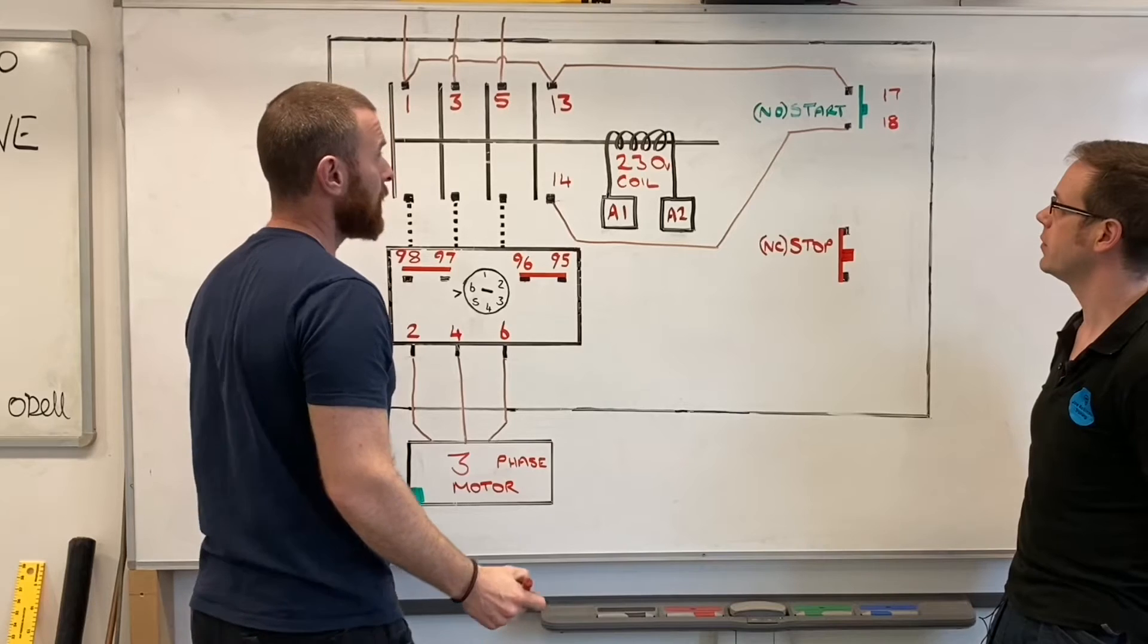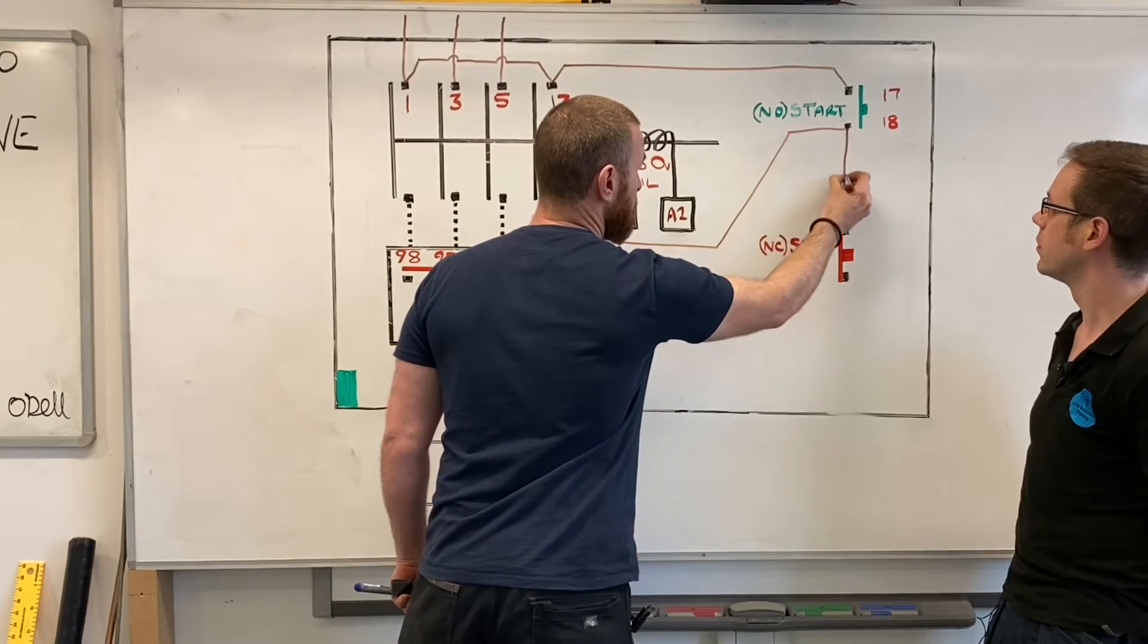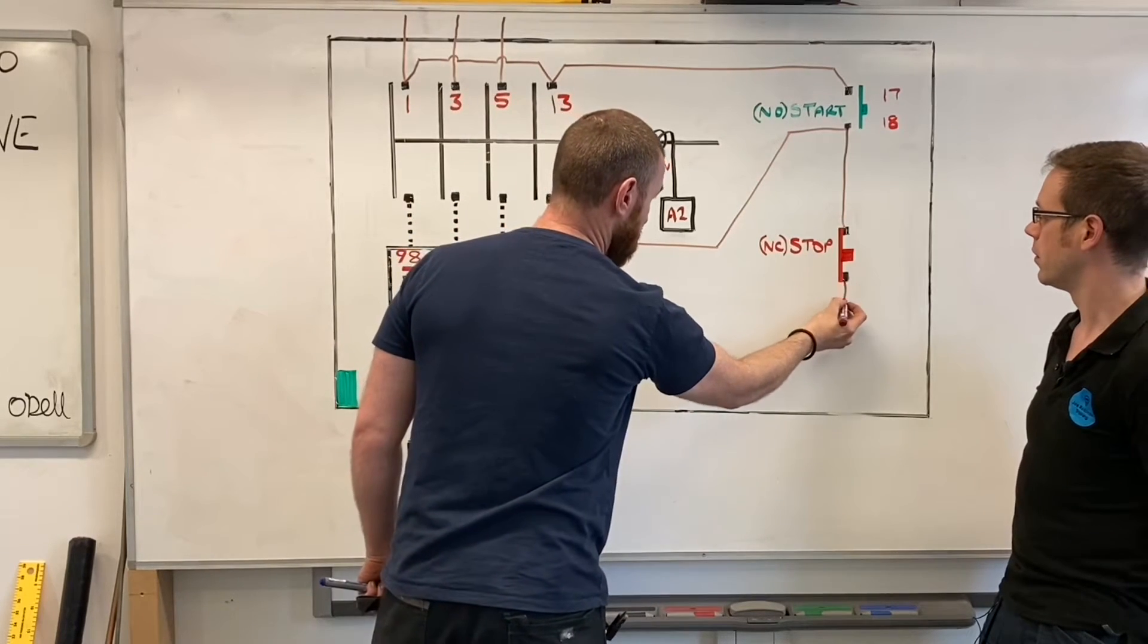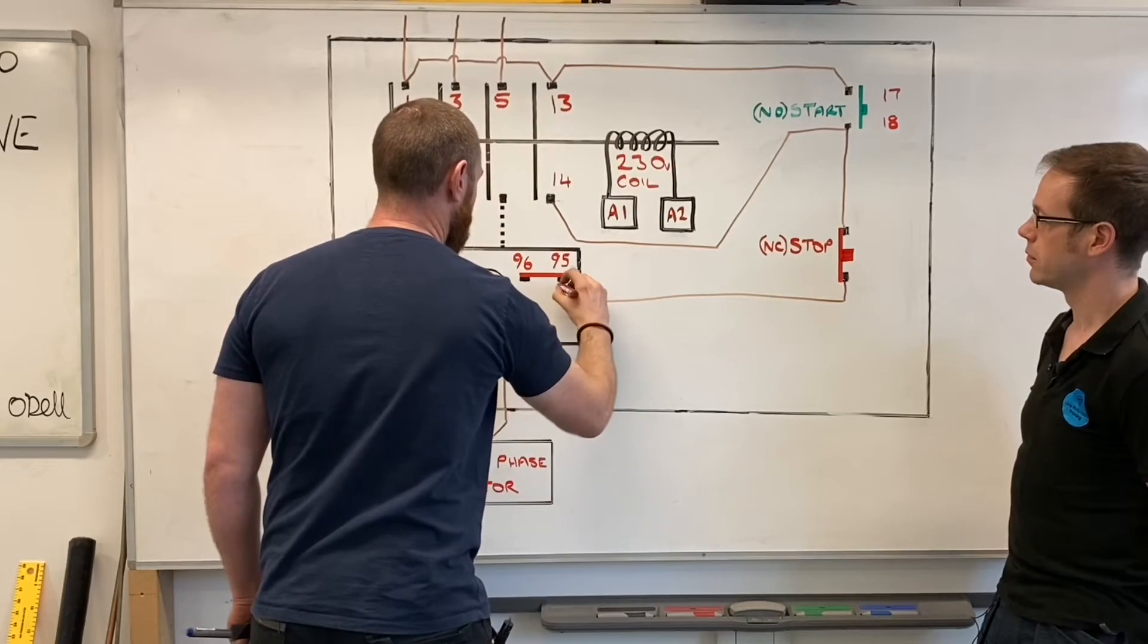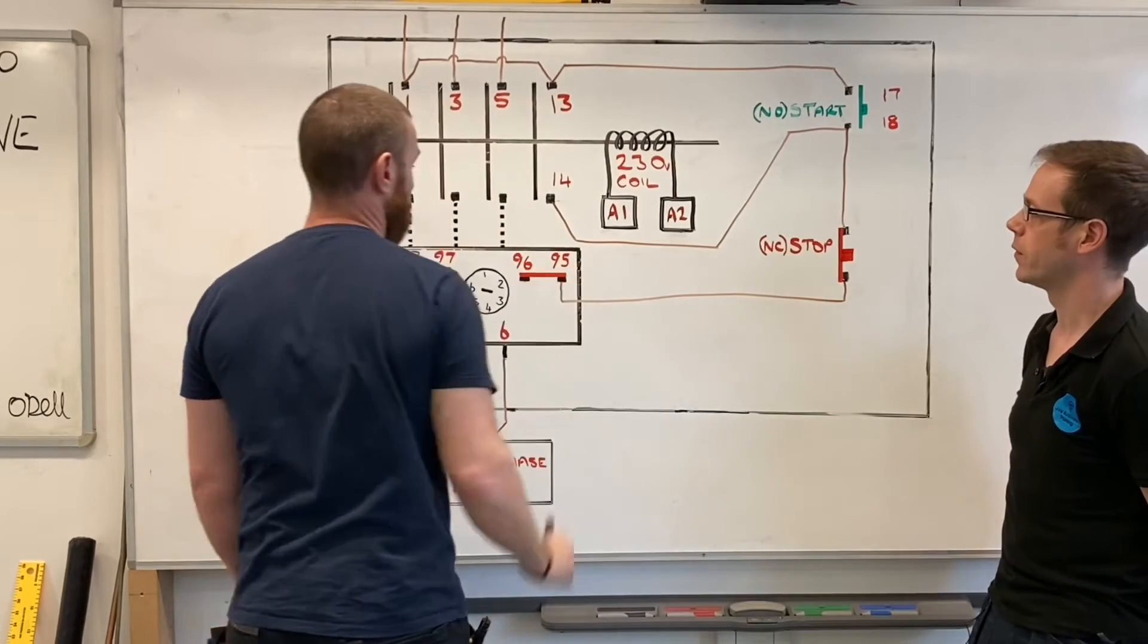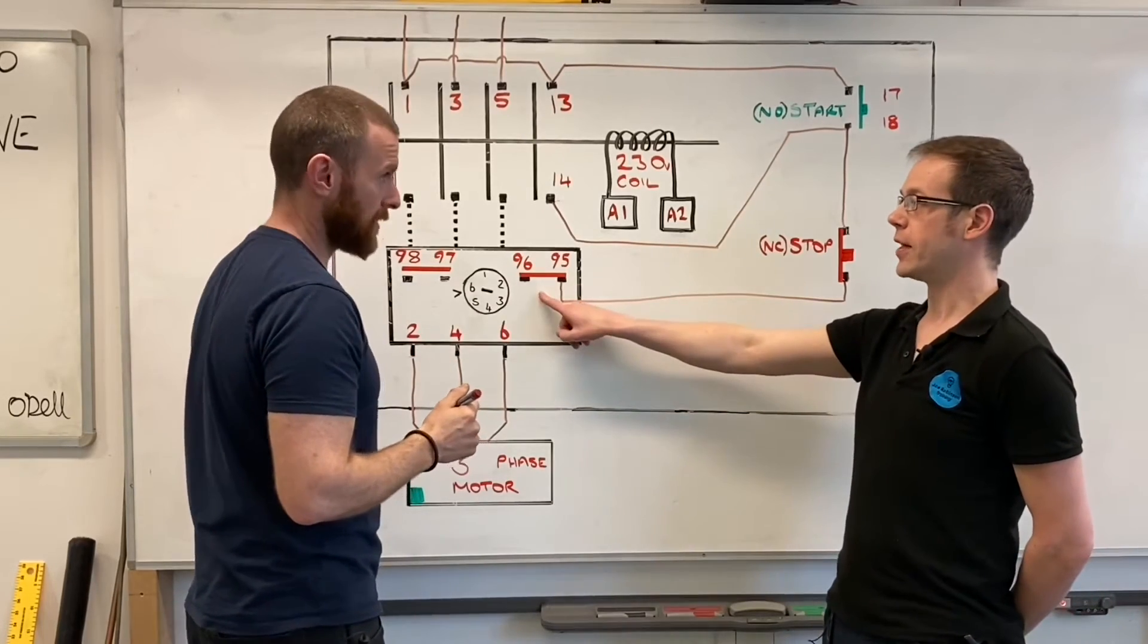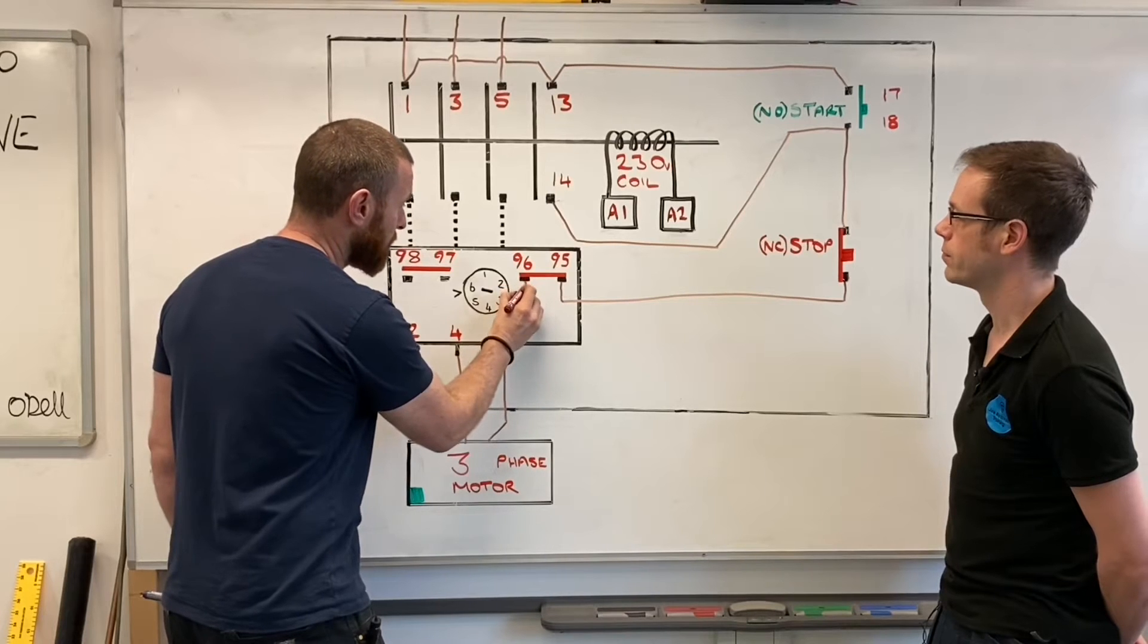Everything looks pretty much the same as how it was before. We need to take down from number 18 down to the stop button, and then from the stop button all the way across to the normally closed terminations of 95 and 96. So this is our overload contact.